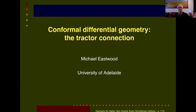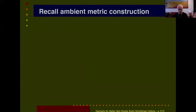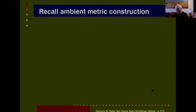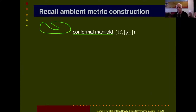In principle this lecture is sort of independent of what was happening last time. I'm going to recall what I was talking about last time, which was the ambient metric construction — the subject of the book by Charlie Fefferman and Robin Graham. They start with a conformal manifold. Of course we're trying to do conformal differential geometry, so everybody is going to start with a conformal manifold.